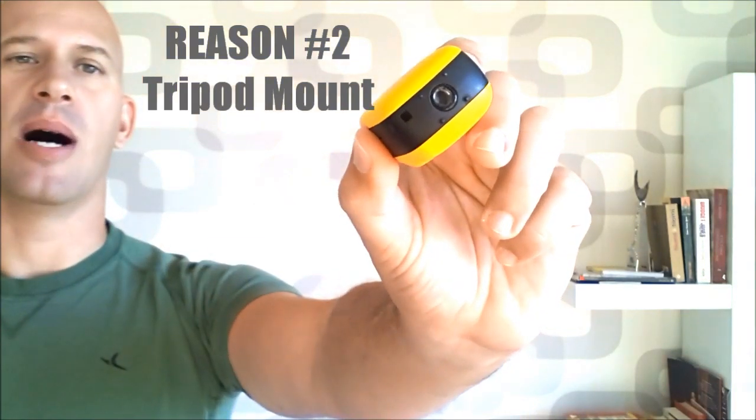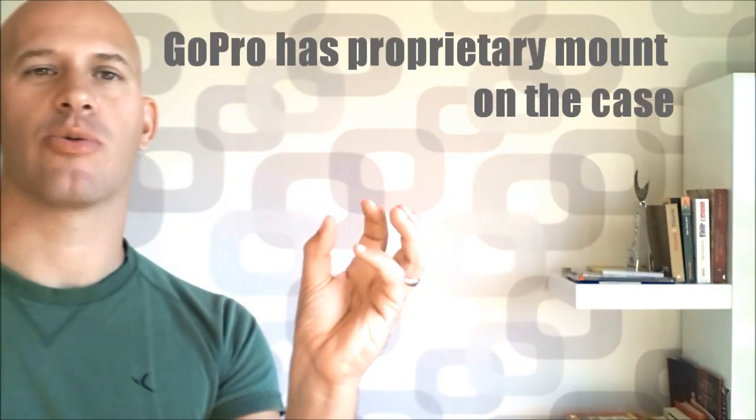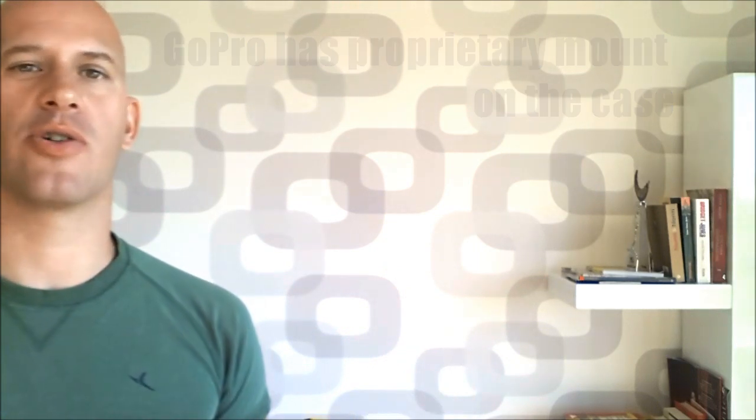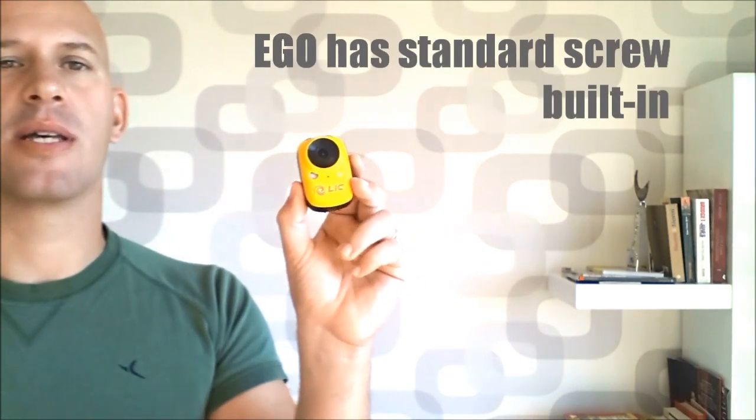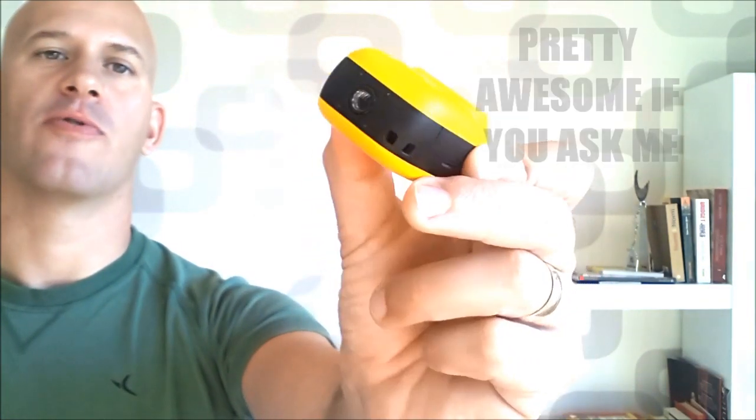Reason number two and this is going to be a very big one is the tripod mount here. The GoPro comes with a proprietary mount which is attached to the case so you cannot really use the camera in an on-the-go situation if you don't have the case. This is different with the Ego because you have the tripod mount here and this can go on any accessory that is meant to mount a camera. So you can use your dolly camera tripod if you have one, you can use a standard tripod, you can use any type of stand, and you can use everything that has a standard mount for camera.